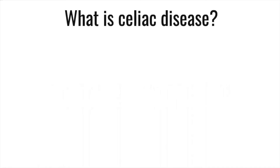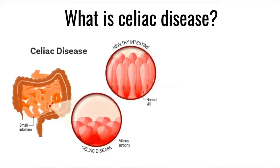What is celiac disease? It is a chronic autoimmune condition where exposure to gluten causes an immune response leading to inflammation in the small intestine, damaging the villi lining it, and preventing proper nutrient absorption. It is estimated to affect every 1 in 100 people worldwide.